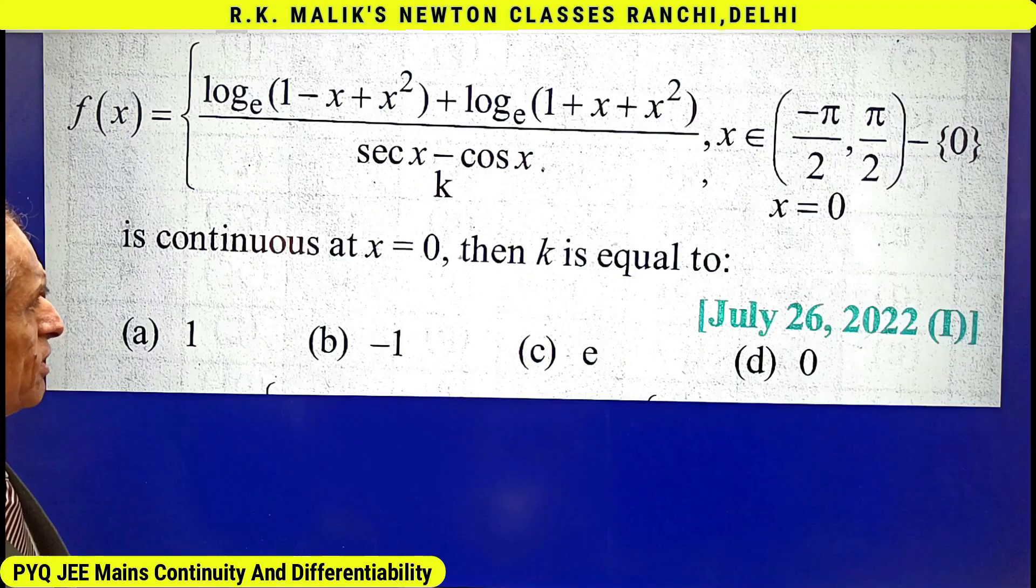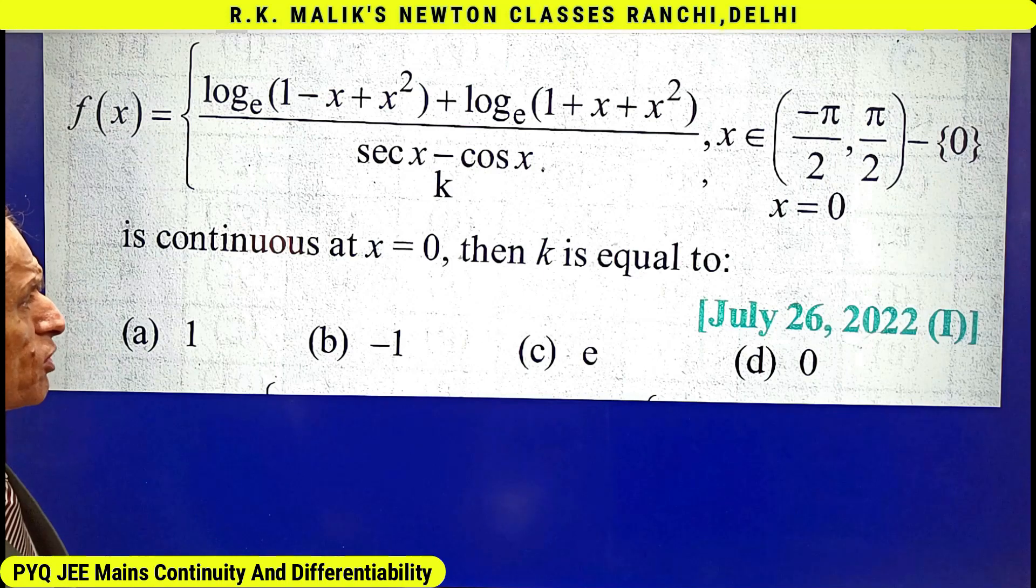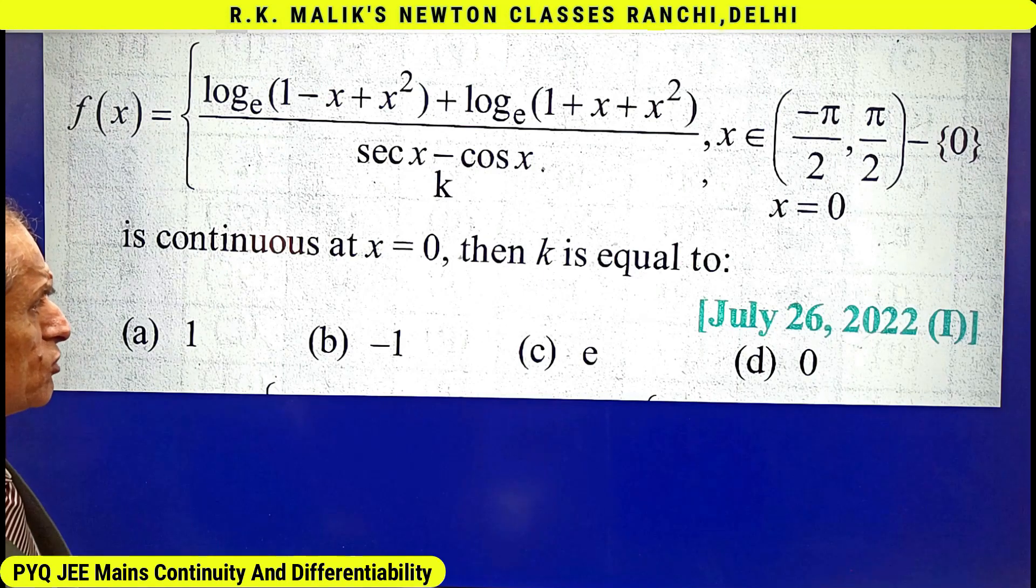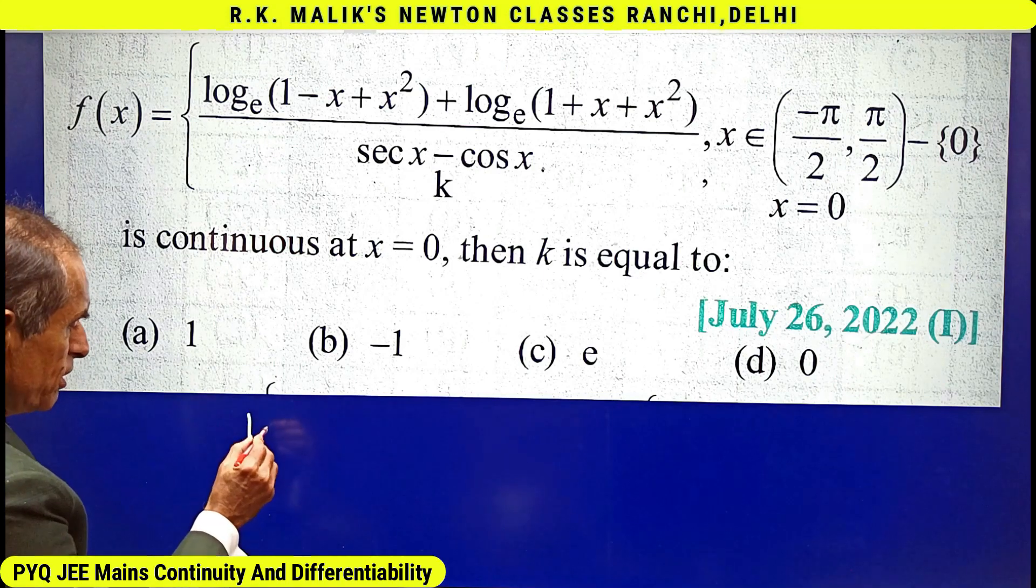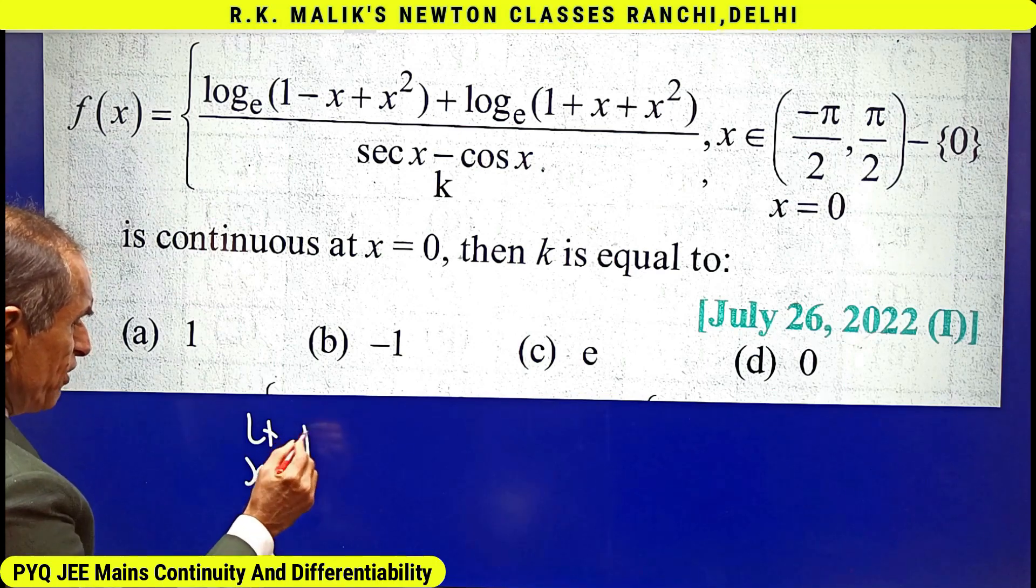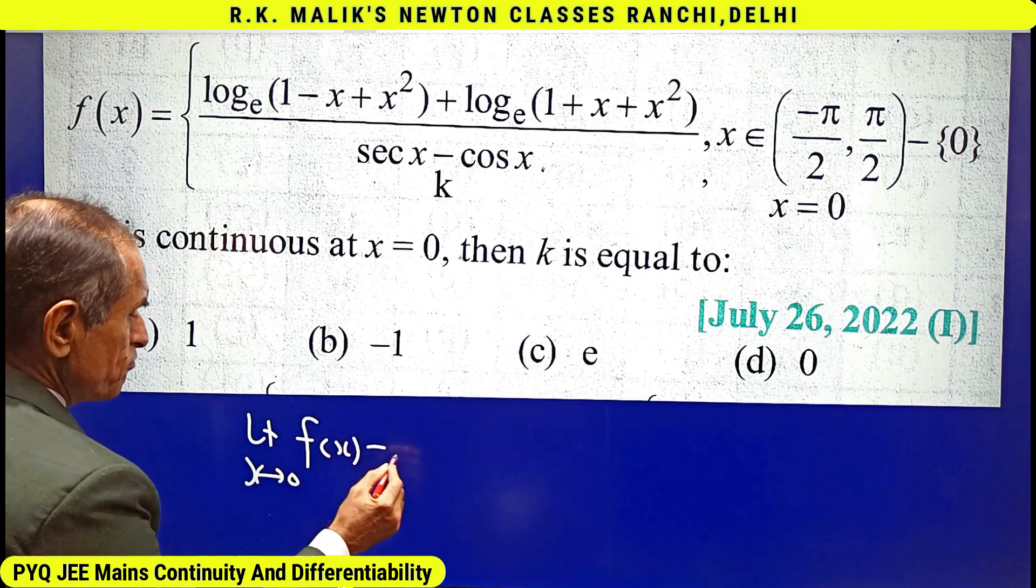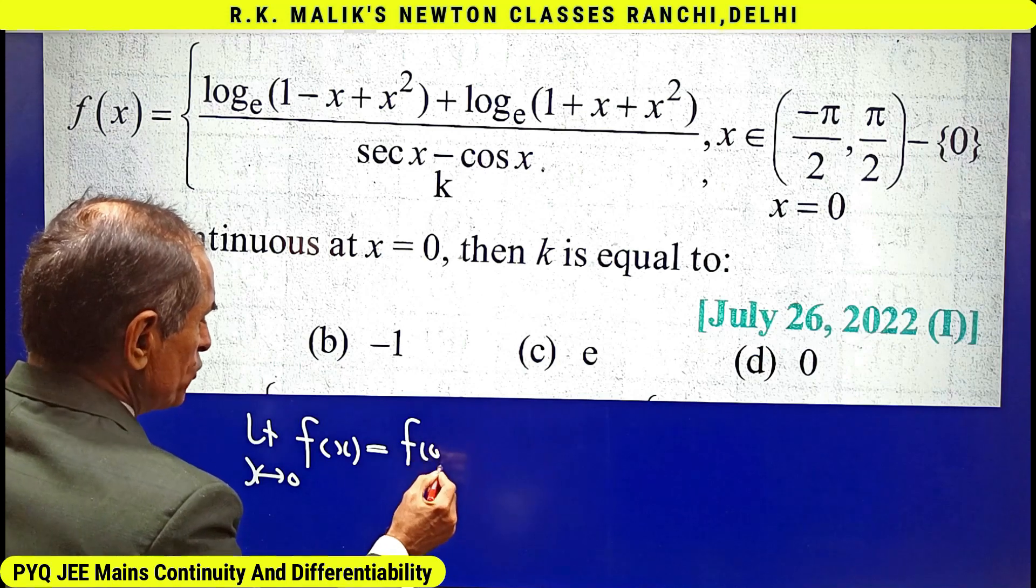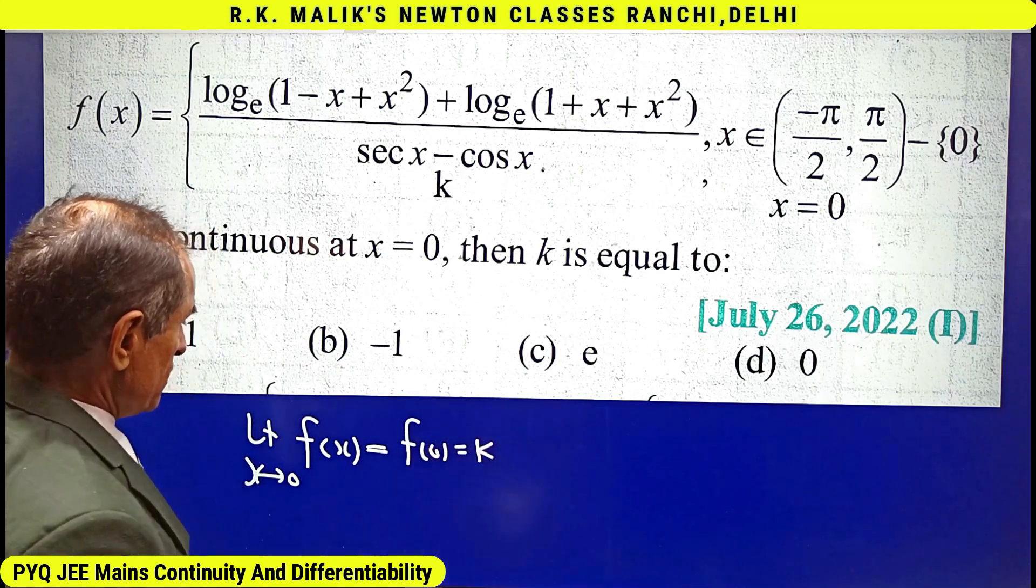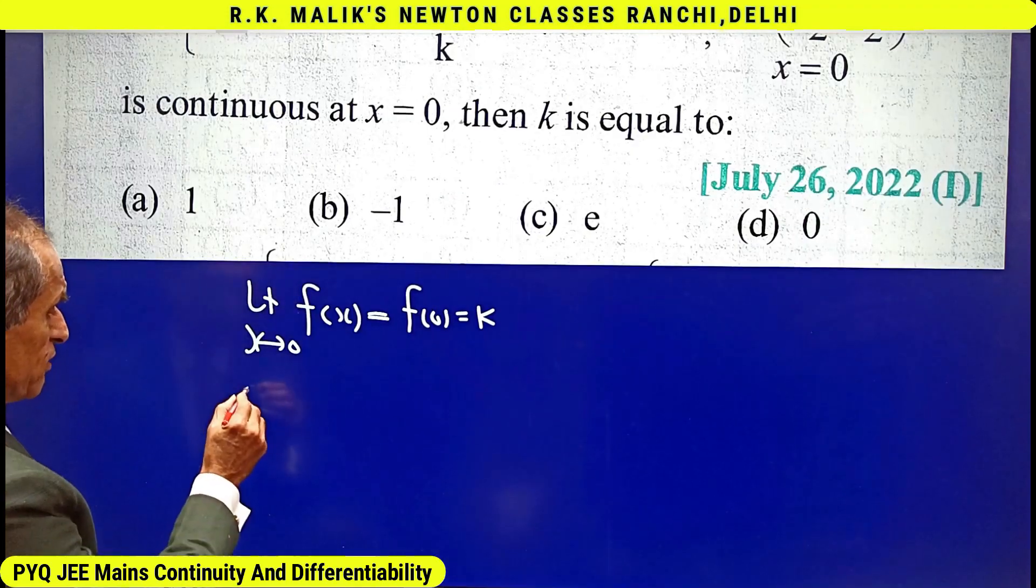It's clear that for the function to be continuous at x equals zero, limit x tends to zero of f(x) must equal f(0), that is k. Now let us find the value of limit x tends to zero.